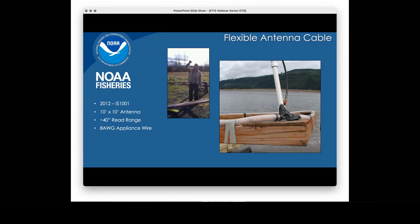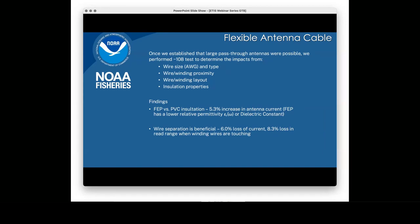We started to notice in the data that more fish were detected on antennas five and six than were detected passing through the array at the end. We confirmed this with dive data showing adults would come to the end, sense the constriction of the antennas, do a few loops, and swim out around the wing wall. Around that time in 2012, Biomark introduced the IS-1001 reader, which is twice as powerful as its predecessor the multiplexer. I got a call asking how big an antenna we could drive with this new reader, so I pulled together a 10-by-10-foot antenna and was surprised to find we were reading 40 inches out in front of it.